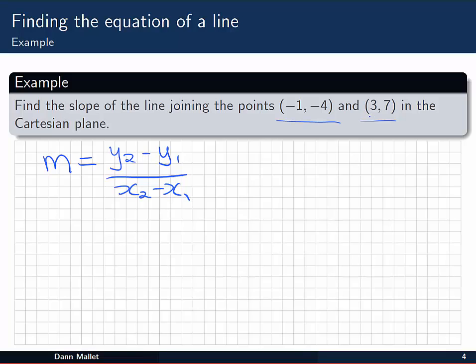These are just the values from the two coordinates. If we think of this one as (x₁, y₁), and the second point as (x₂, y₂), we can just simply substitute those values down. y₂ is 7, take y₁, which is minus 4, x₂, which is 3, take away x₁, which is minus 1, and we have 11 on the top and 4 on the bottom. So the gradient here is 11 over 4, or almost 3.